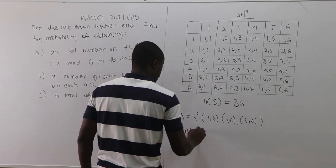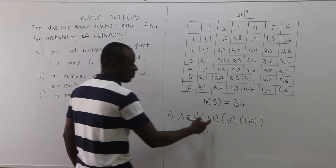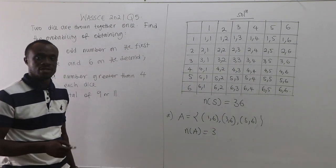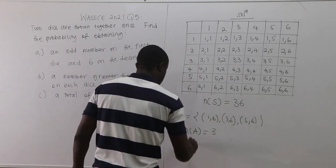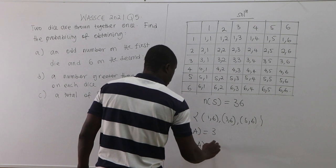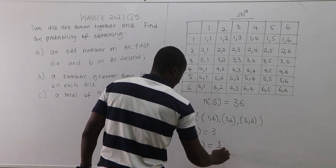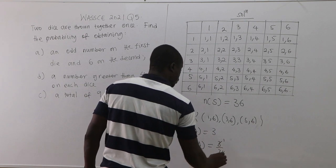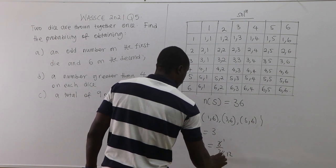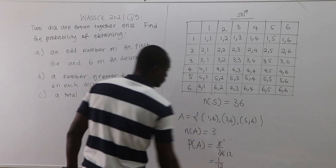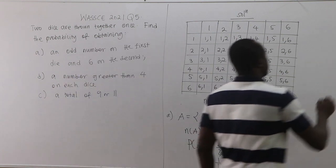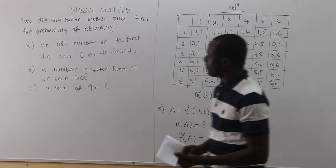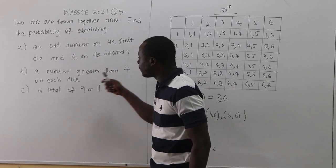Clearly the number of outcomes in event A is three. Probability equals number of favorable events over total sample space, so P(A) = 3/36 = 1/12. Now let's look at part B, which says a number greater than four on each die.